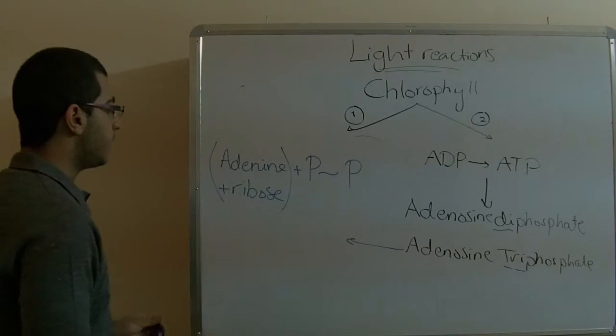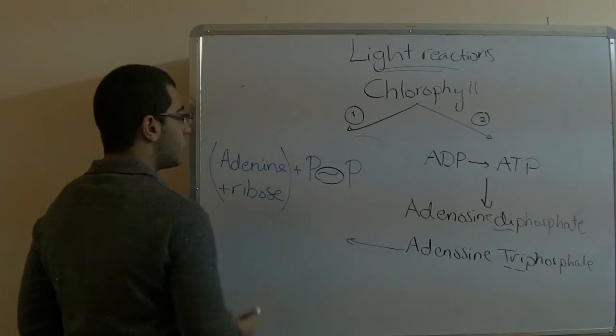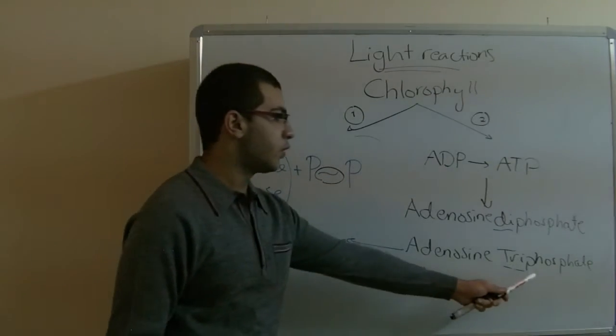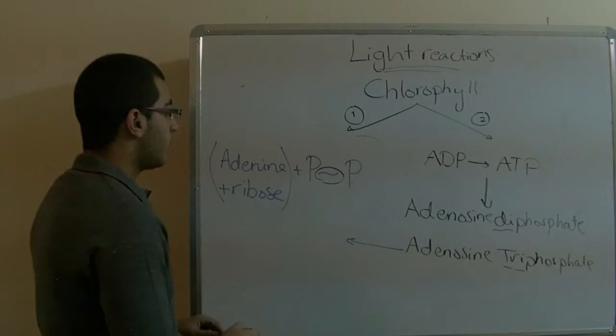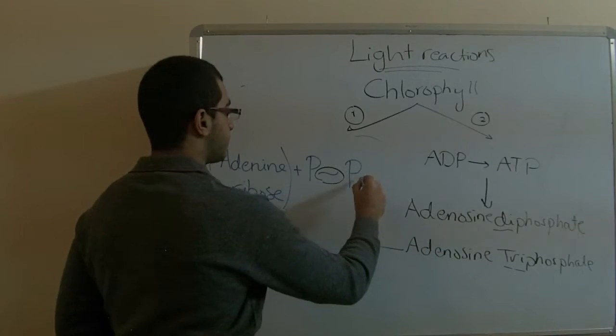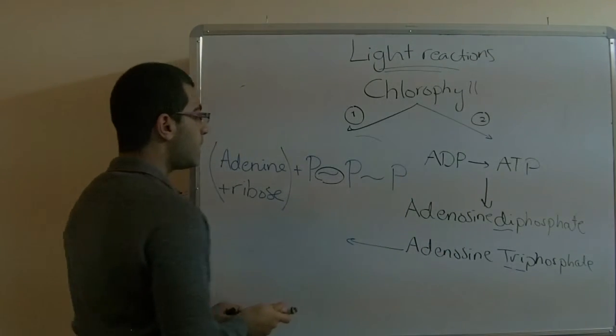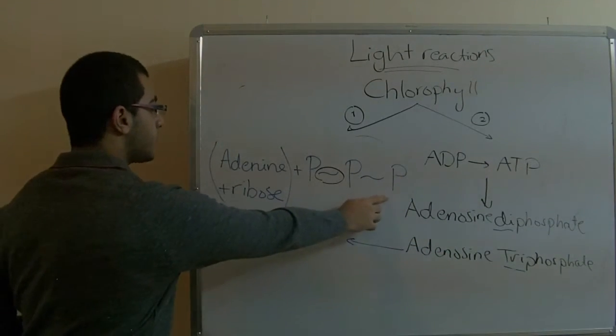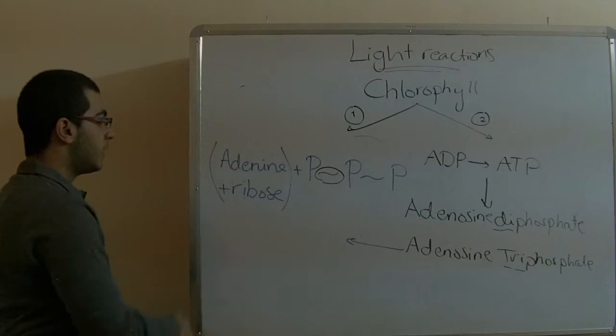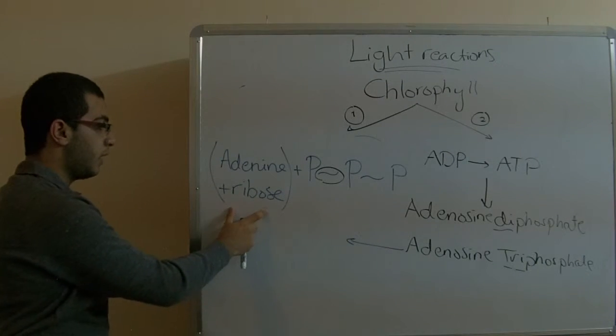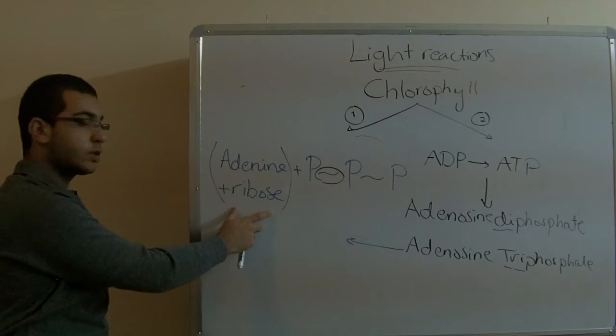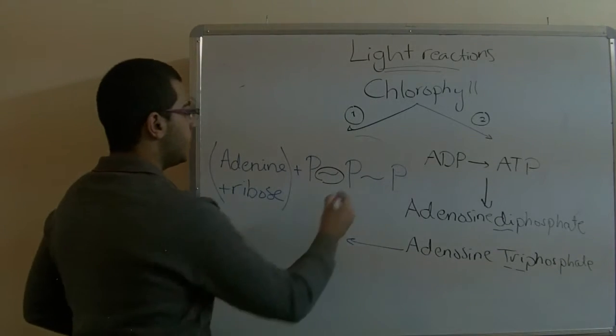Here this squiggle is used to join between the phosphate groups. So we have triphosphate - three phosphate groups linked to the adenine plus a sugar called ribose.